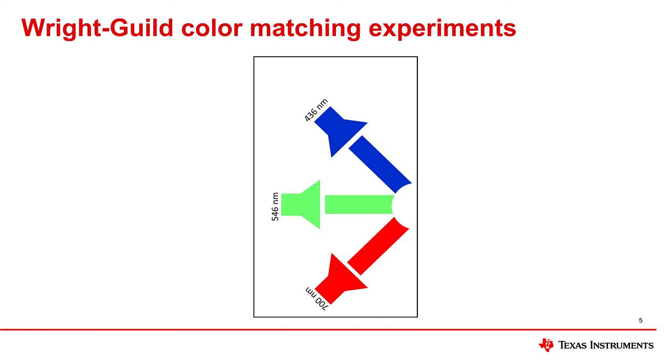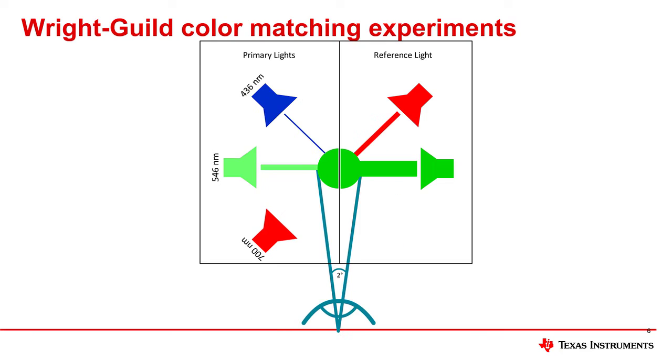Similarly, white light is created with equal amounts of the three primary lights. There were certain cases where the reference light could not be recreated with the three primary light sources. In order to solve this, a second primary light source was added to the reference side. This added light could then be adjusted along with the lights on the other side of the partition until a color match was made.